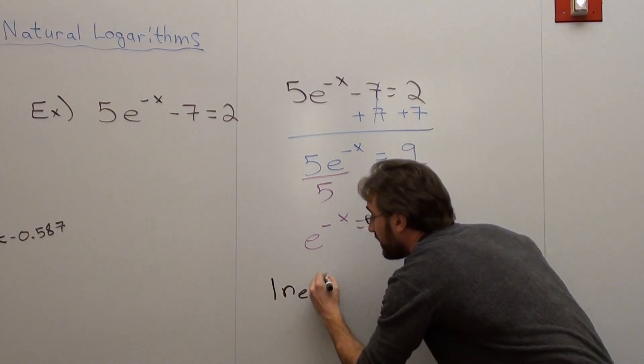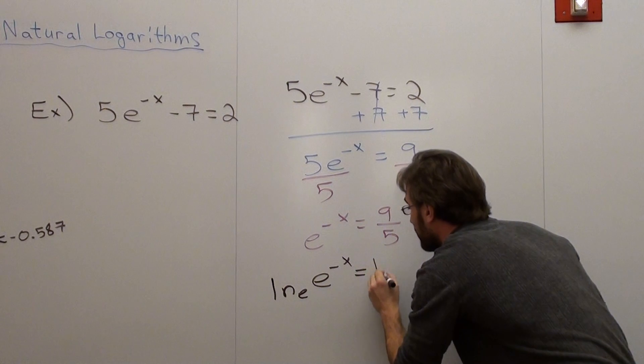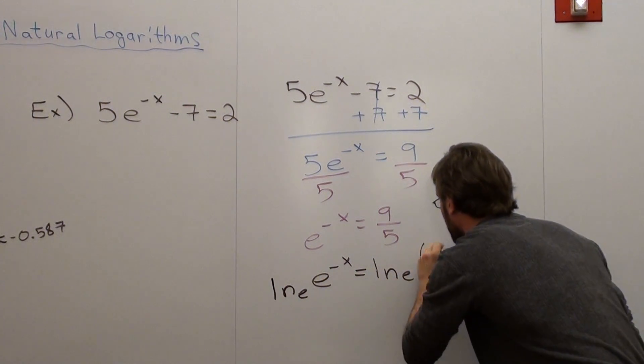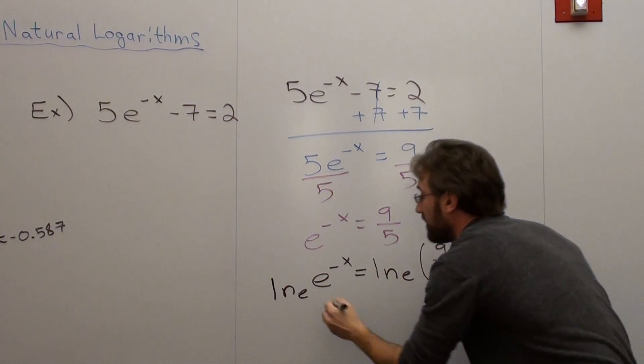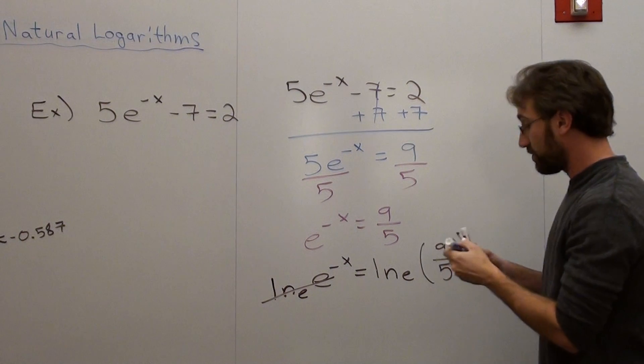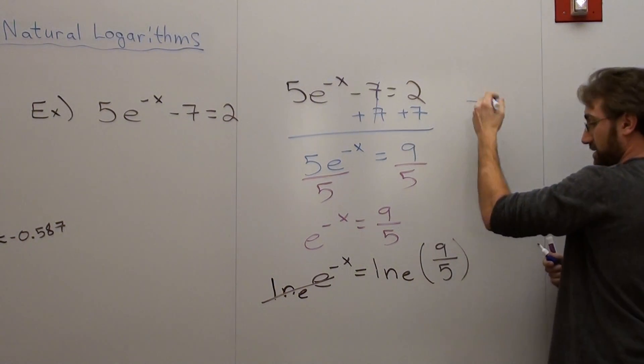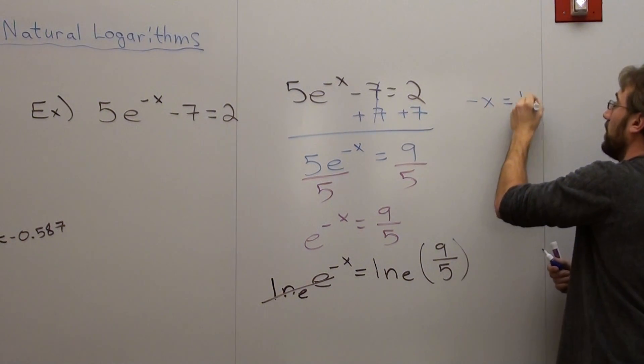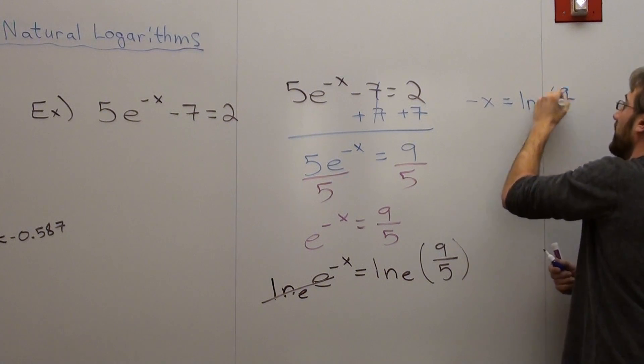And these cancel. And I'm left with negative x equals the natural log of 9 fifths.